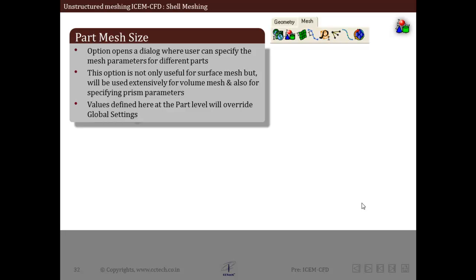Now we will see options that are related to part mesh size. This option opens a dialog box in which the user can specify mesh parameters related to individual parts. These mesh sizes will not only be limited to the surface mesh that we are creating but will also extend to volume mesh as well as prism mesh. These values defined at part level will override global settings.